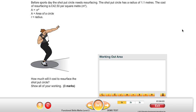So the question goes: before sports day the shot put circle needs resurfacing. The shot put circle has a radius of 1.1 metres. The cost of resurfacing is £42.50 per square metre. We've got a formula there which is a equals pi r squared. A is the area of the circle and r is the radius. So really that formula means to work out the area of a circle it is pi times the radius squared.